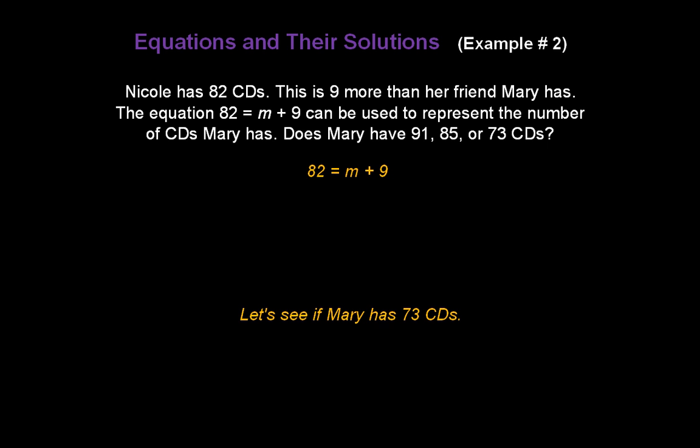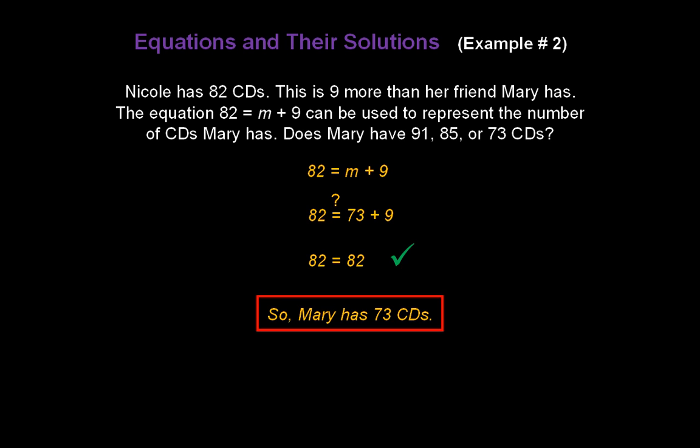Let's try the last number. Let's see if Mary has 73 CDs. Replace m with 73. Does 82 equal 73 plus 9? Solve the right-hand side. Does 82 equal 82? Of course it does. 82 equals 82. So we know Mary has 73 CDs.